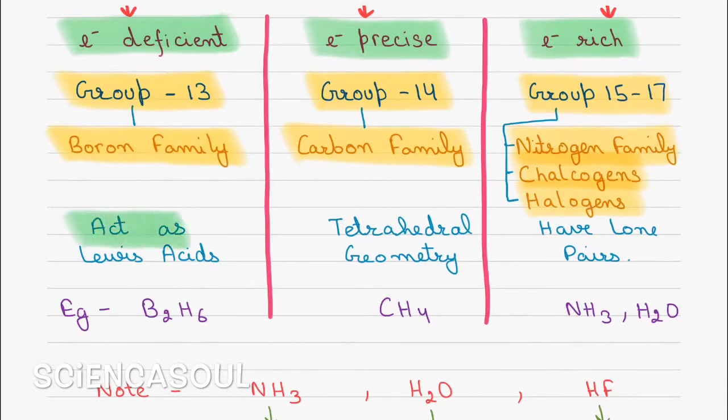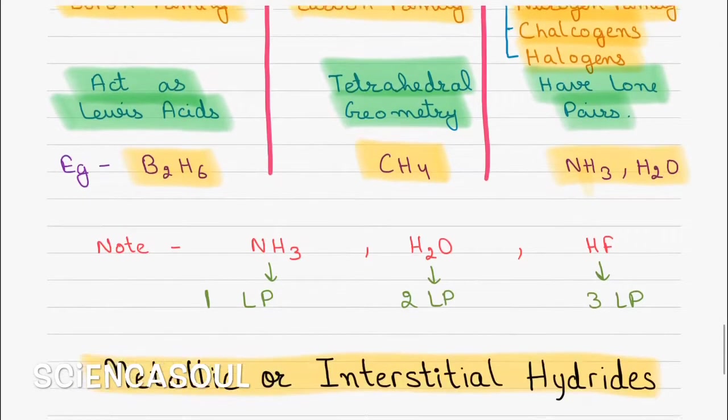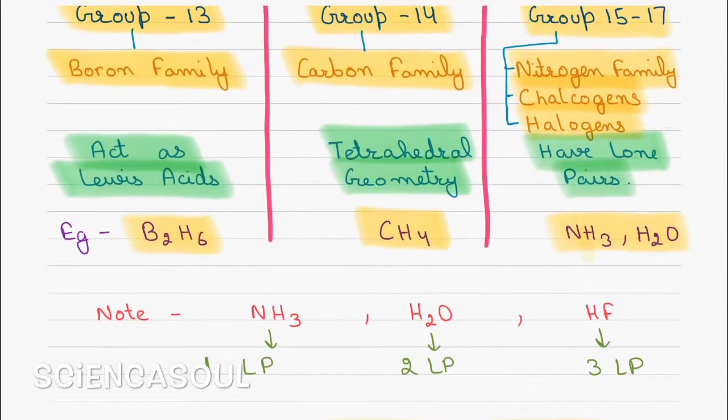One property is also given: electron deficient act as Lewis acids, while electron precise have tetrahedral geometry. Electron rich have lone pairs. Examples of electron deficient is B2H6 diborane, electron precise CH4, and electron rich NH3 and H2O. One note is also given here: NH3 has one lone pair, while H2O has two lone pairs, and HF has three lone pairs.